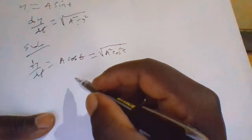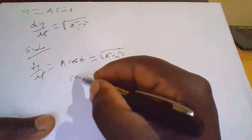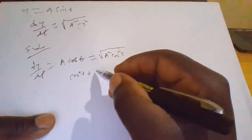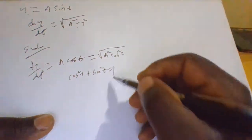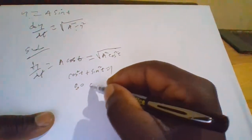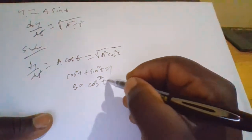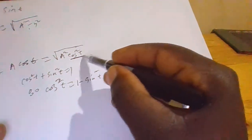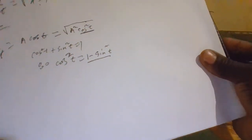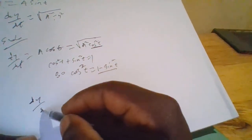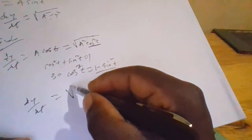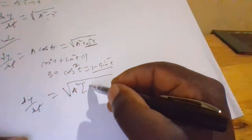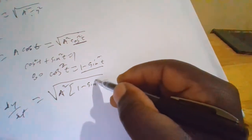But from the fundamental identity we know that cos squared t plus sin squared t equals 1. Therefore cos squared t equals 1 minus sin squared t. Therefore we replace cos squared t with 1 minus sin squared t, then open the bracket: equals the square root of A squared minus A squared sin squared t.